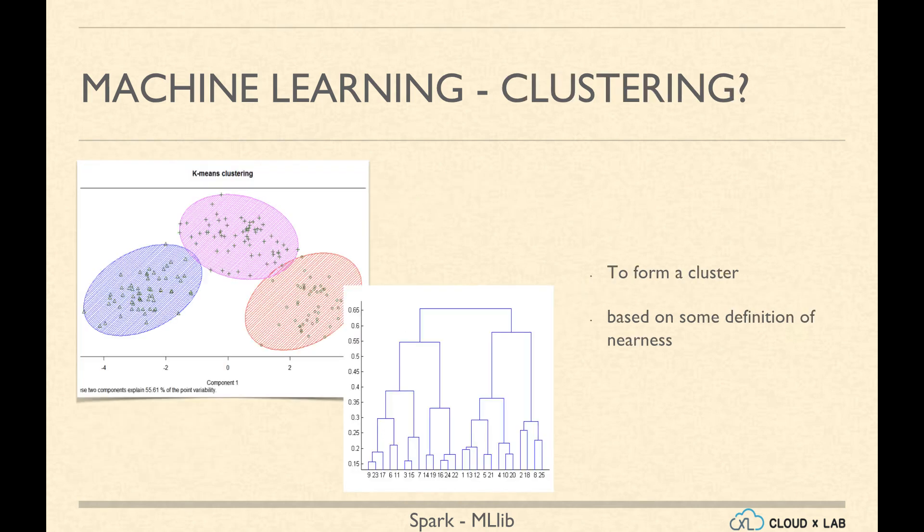Clustering is an unsupervised machine learning task. In clustering, we essentially group similar items together. We need to define the criteria for similarity. Sometimes, we may need to group elements to form a hierarchy. This is known as hierarchical clustering.